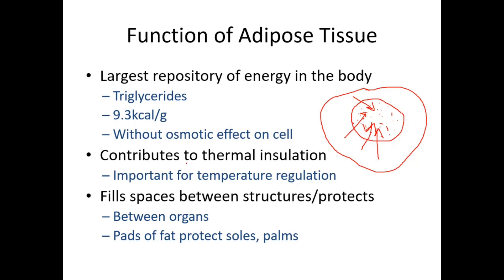Another function is thermal insulation. Lipid conducts heat poorly, so it provides thermal insulation in our body, especially under the skin. It doesn't allow the exchange of heat between our body and the peripheral environment. The last function is that adipose tissue fills spaces between structures, between organs, and between other tissues.